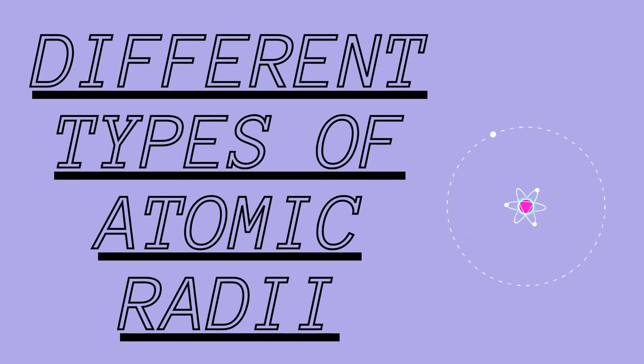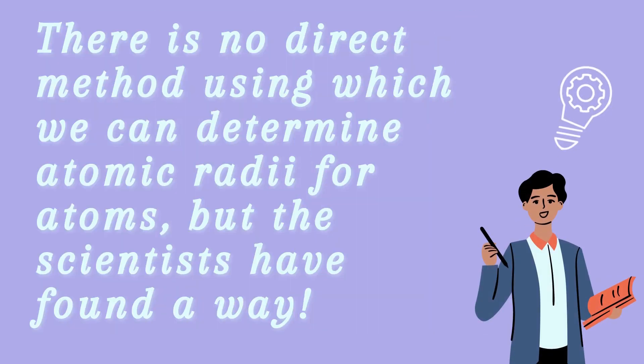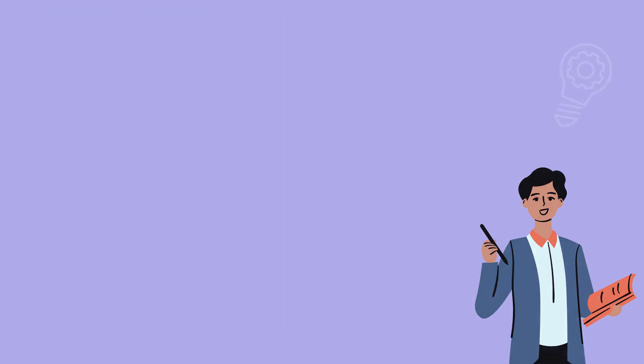In this video, we will be talking about the different types of atomic radii. There is no direct method using which we can determine atomic radii for atoms, but the scientists have found a way.